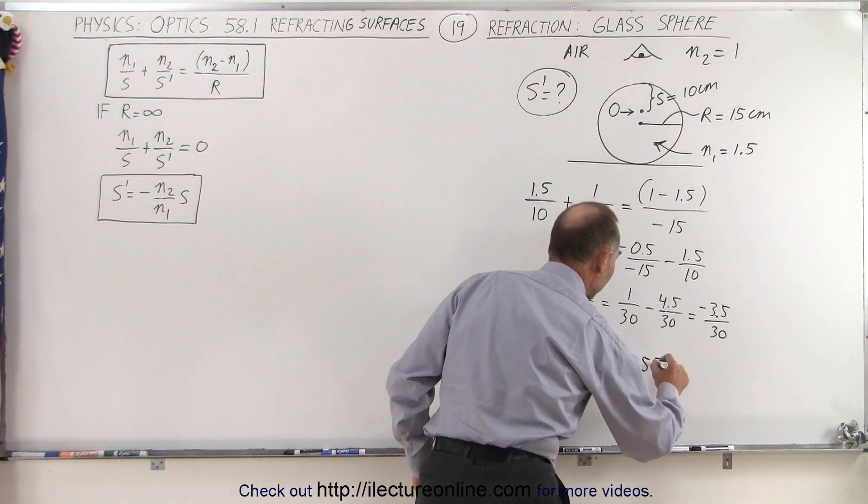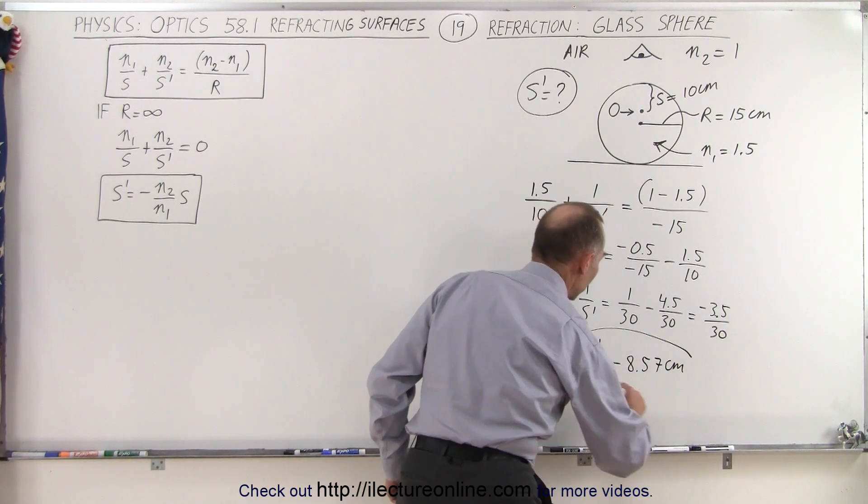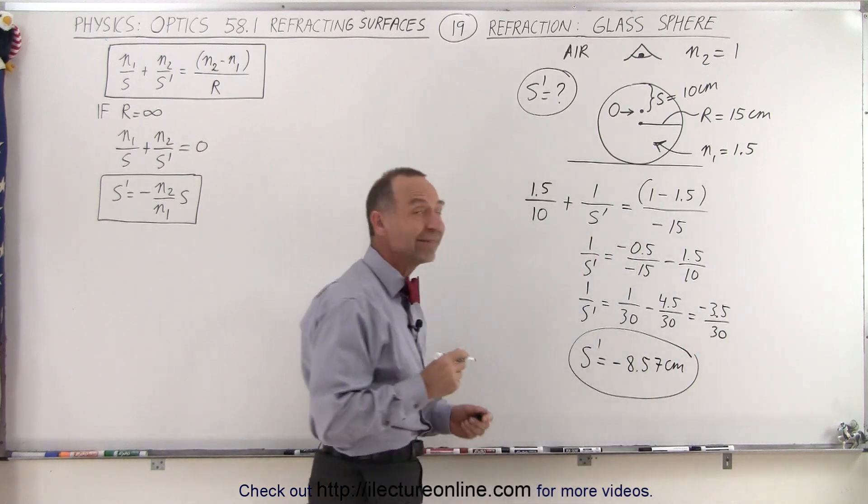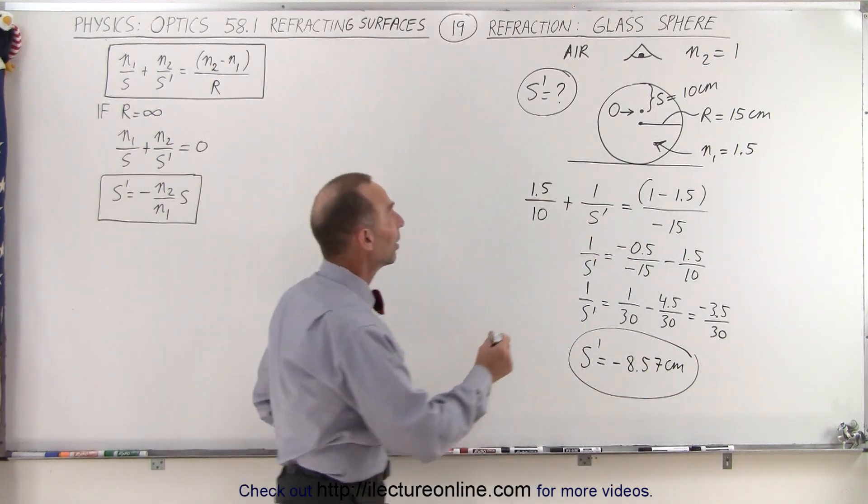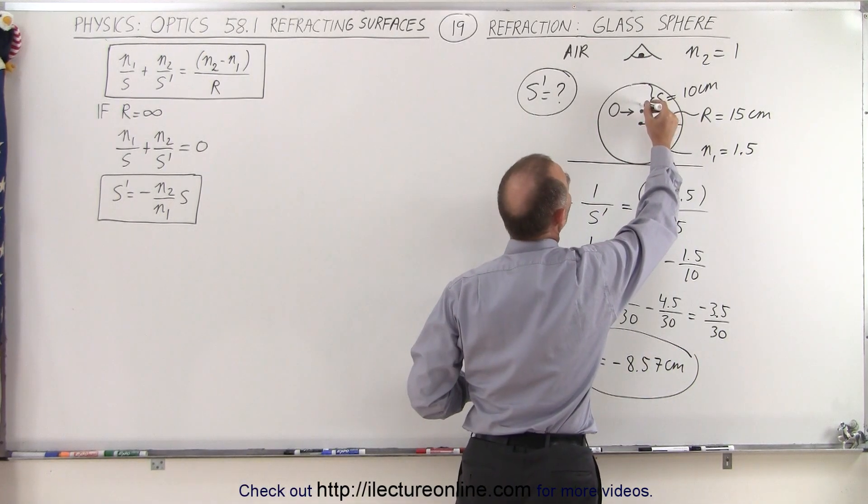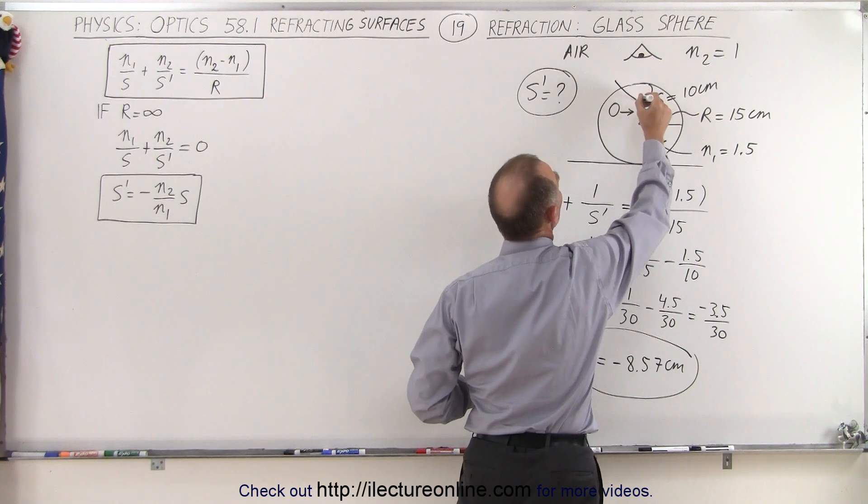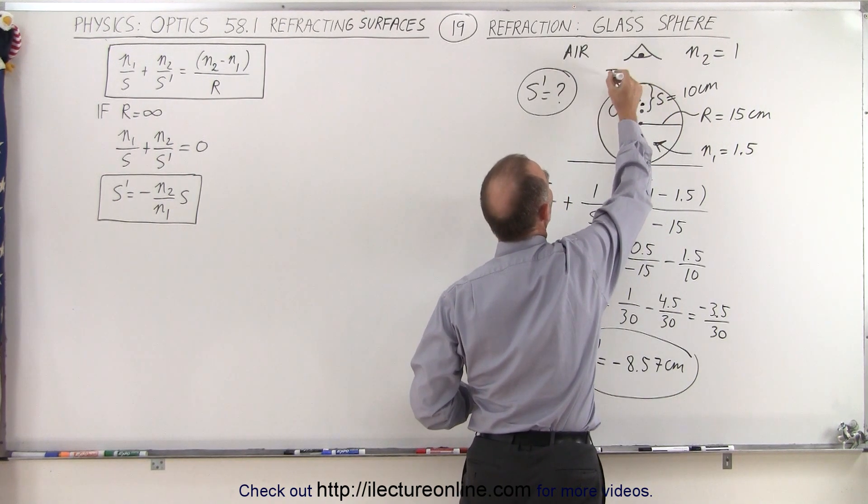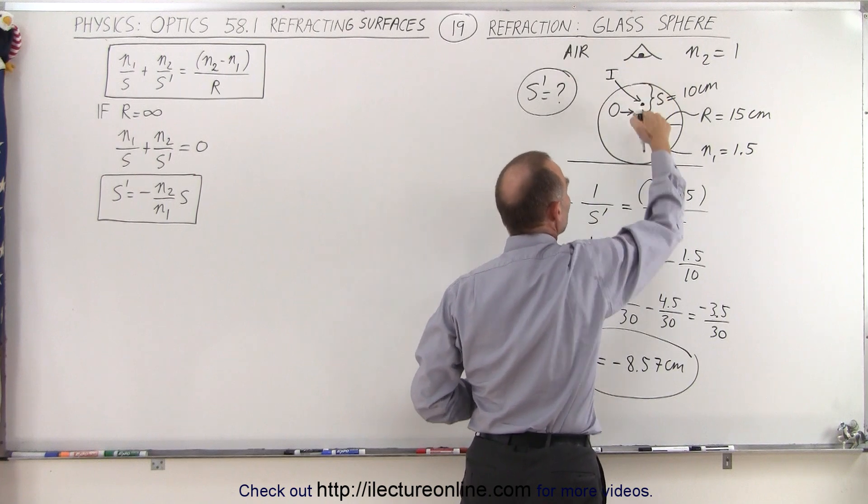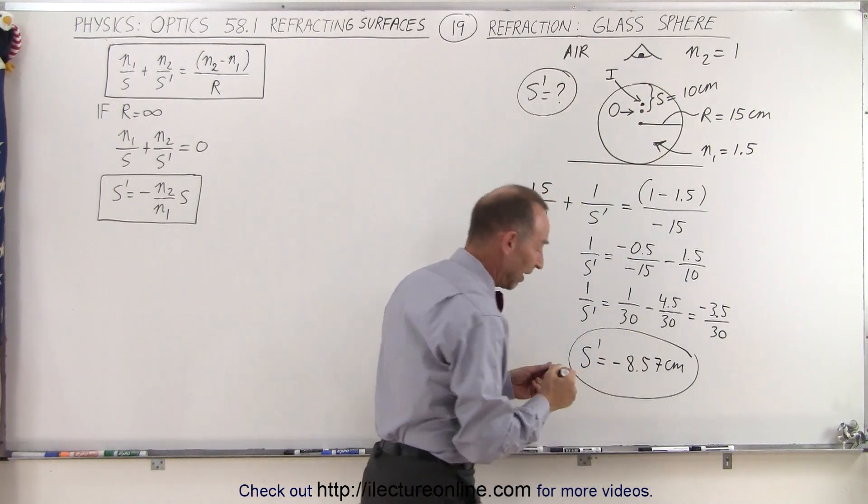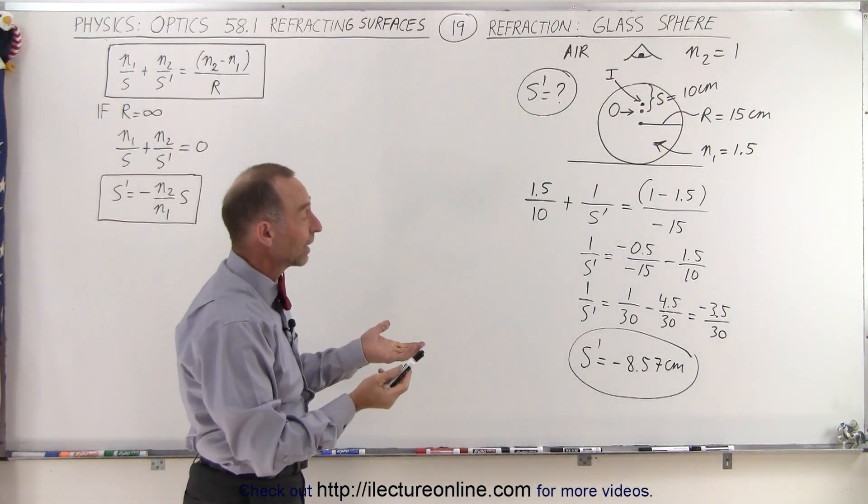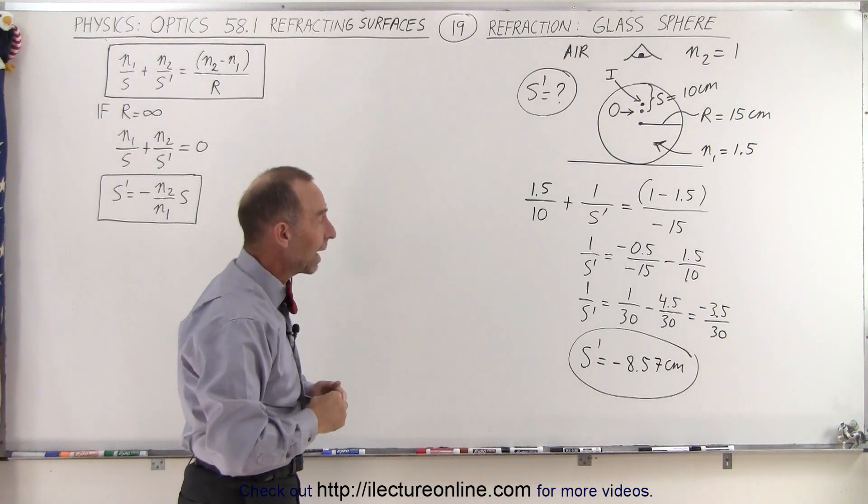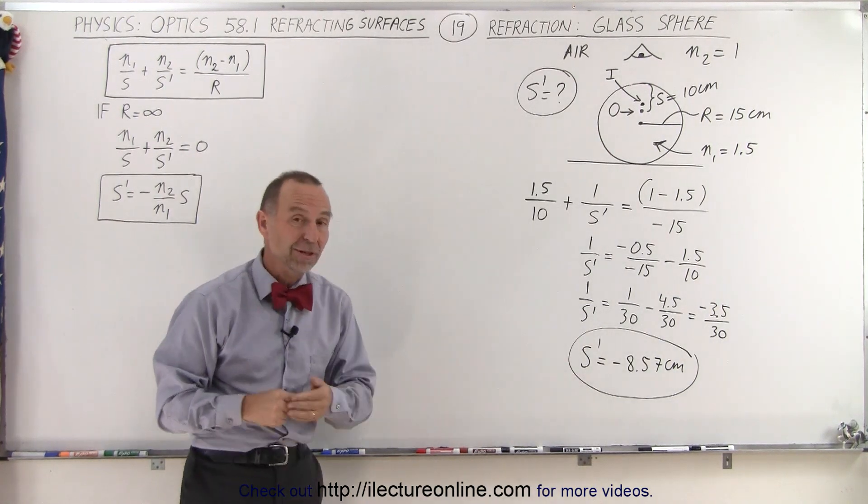Notice the fact that it's negative means that it's on the same side as the object, which means the image would be somewhere in this neighborhood right there. So for the object being 10 centimeters away, the image is going to be 8.57 centimeters away. Negative simply means it's on the same side as the object. And that's how you do that.